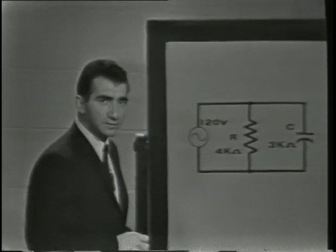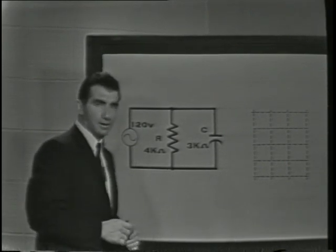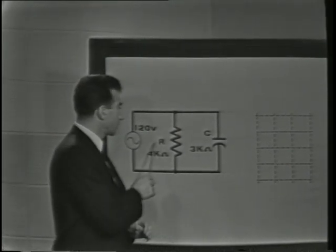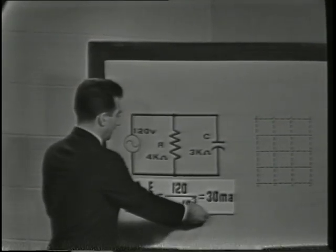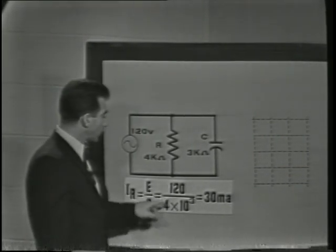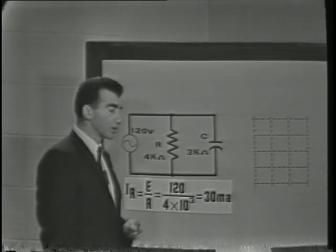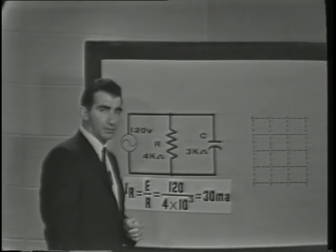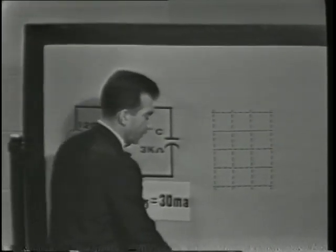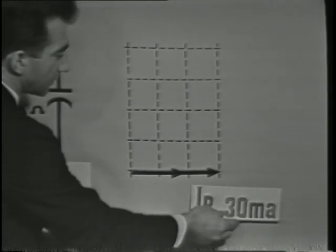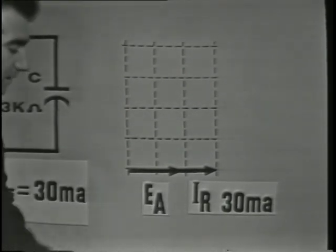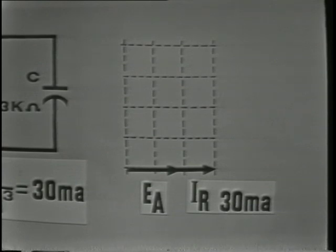Since we're concerned with parallel RC circuits in this lesson, let's examine a circuit with given component values. We'll calculate the branch currents and plot this information vectorally on our graph. The current through each branch can be easily determined by simply applying Ohm's law. IR may be found by dividing the resistance into the voltage: 120 volts over 4k ohms gives us the total current through the resistive leg of 30 milliamps. The vector for IR will show 30 milliamps, and this resistive current must be shown in phase with EA since the resistor does not introduce a phase shift.